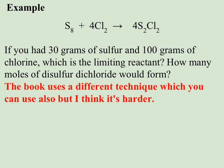So let's look at an example here. If you have 30 grams of sulfur and 100 grams of chlorine, which is the limiting reactant? Well before I can decide which is the limiting reactant, I need to find out how many moles of S2Cl2 could either of these reactants make.